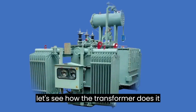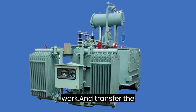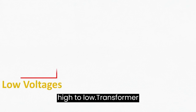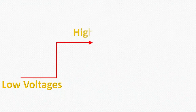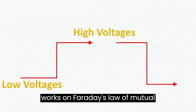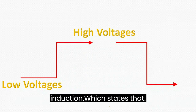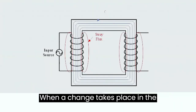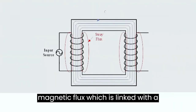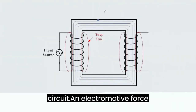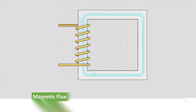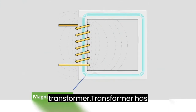Now let's see how the Transformer works and transfers electrical voltages from low to high and high to low. Transformer works on Faraday's Law of Mutual Induction, which states that when a change takes place in the magnetic flux linked with a circuit, an electromotive force will be induced in the circuit. To understand this law, we first need to understand the construction of a Transformer.